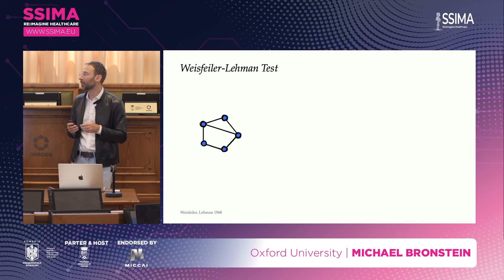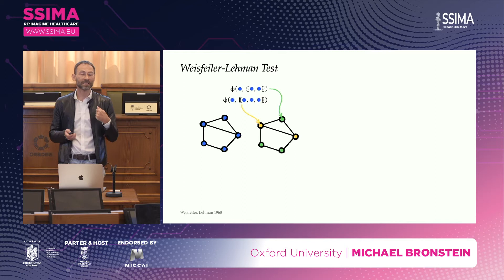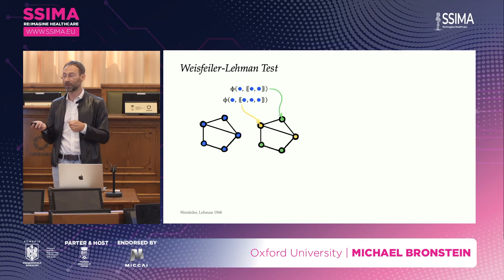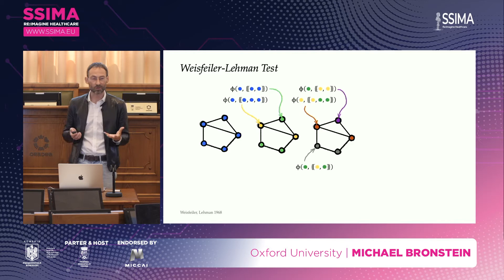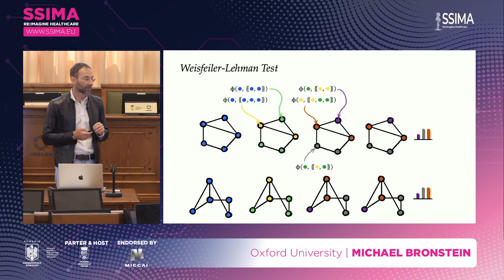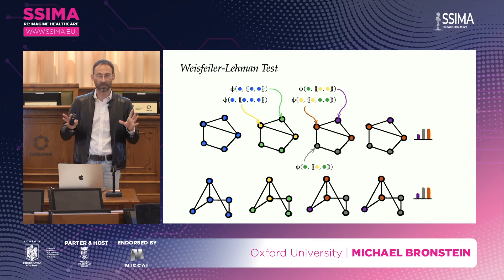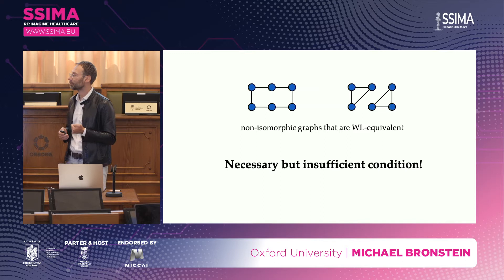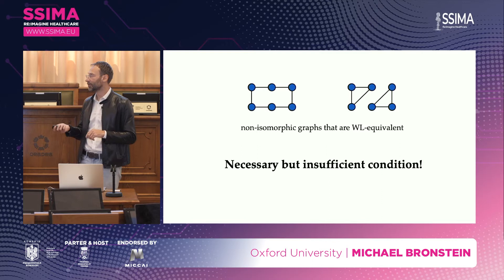The Weisfeiler-Lehmann test is an iterative color refinement procedure. It starts with all nodes assigned the same label, then studies the neighborhood structure of every node and applies an injective function — essentially hashing the neighborhood structure. Initially, a node with two blue neighbors and a node with three blue neighbors will be assigned distinct colors. We repeat this procedure until colors stop changing, then output the distribution of colors as a graph descriptor. If two graphs give different distributions, they are definitely not isomorphic; if the same, we don't know — it's a necessary but insufficient condition. You can find simple examples of non-isomorphic graphs deemed equivalent by the WL algorithm.